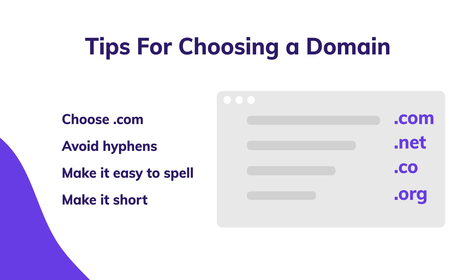I'd like to share some tips for choosing a domain name. First of all, if possible, always choose .com because it's the most popular and most recognizable one. If that domain name is not available, the next best option would be .net. Second tip: make it short. Don't go over the top with a long domain name — just make it short and simple. The best case scenario is to keep it under 15 characters.